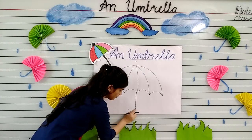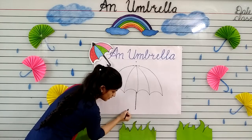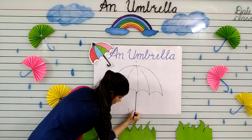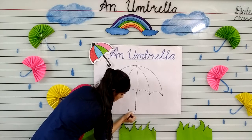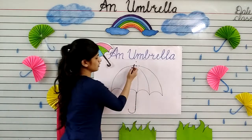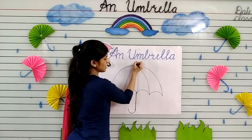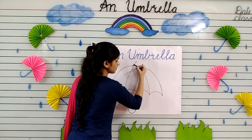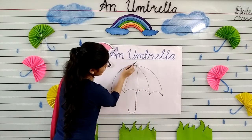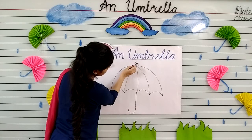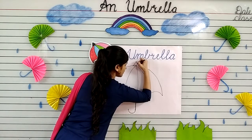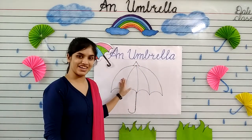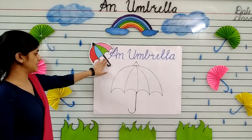Now make one more curve from this dot to this dot and make it dark. Now kids, put your crayon on this dot — the left one — and make a slanting line from this dot to this. Now one more slanting line from this dot to this. Now one more slanting line from this dot to this.